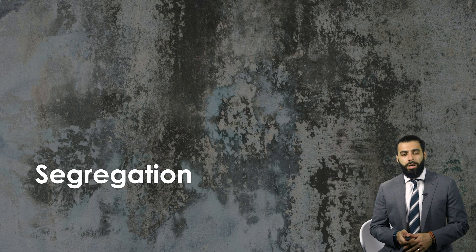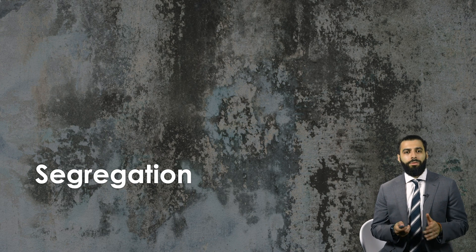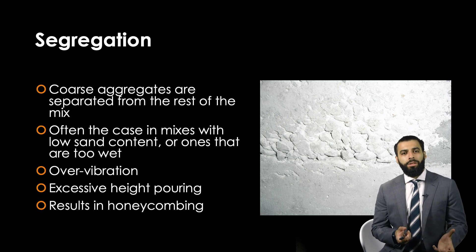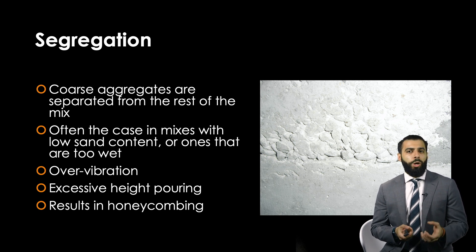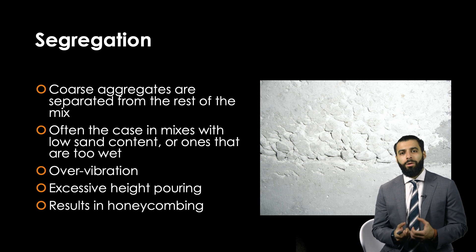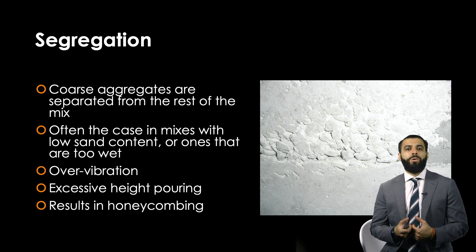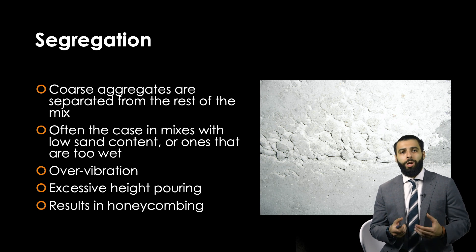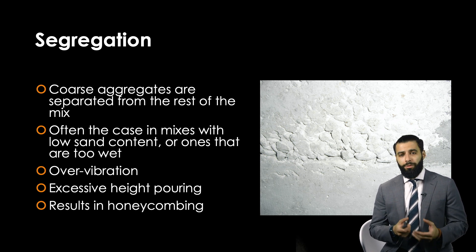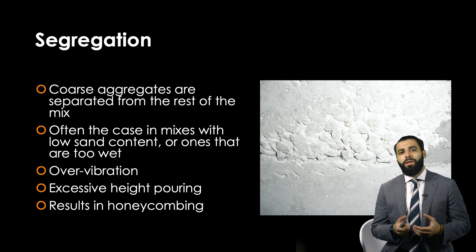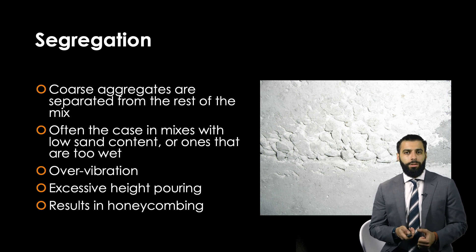The first construction defect is segregation, where the coarse aggregates are separated from the rest of the mix, as shown in the image. Mixes that have low sand content are very likely to experience segregation. Another common cause of segregation is over-vibration — when you over-compact your concrete mix. In addition, pouring concrete from an excessive height or in the incorrect way will also lead to segregation, which results in the honeycombing pattern seen in the image.